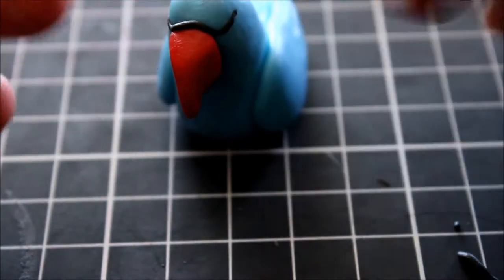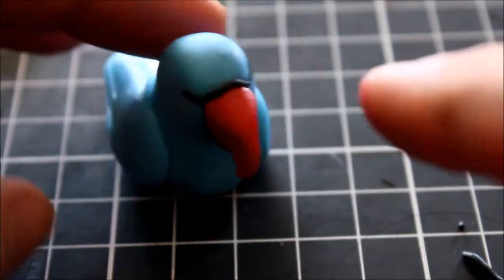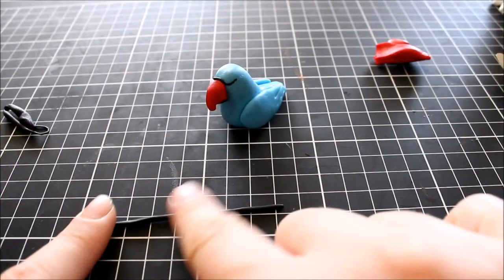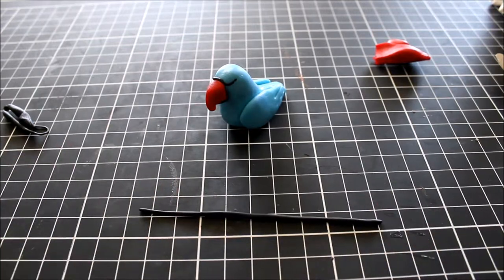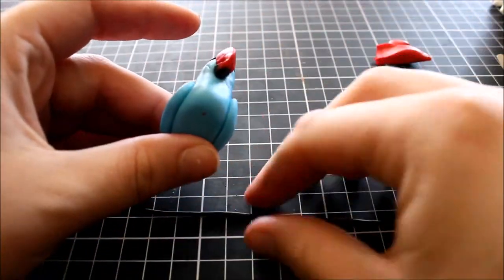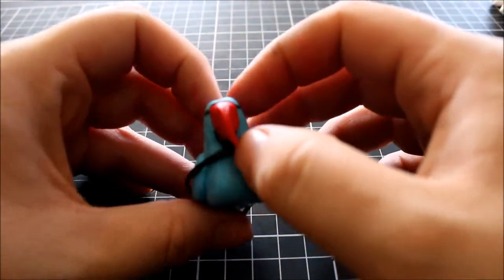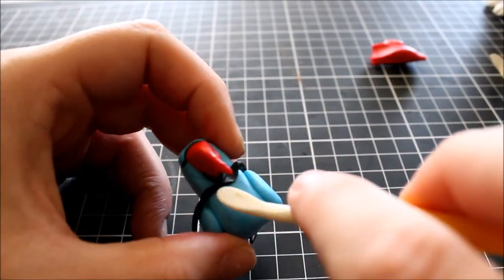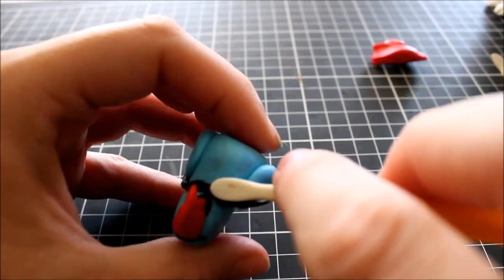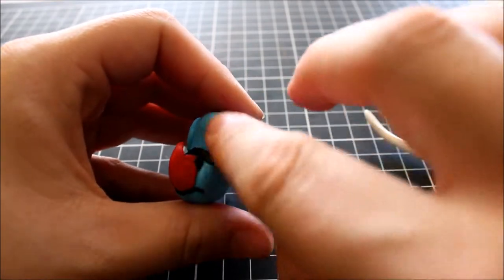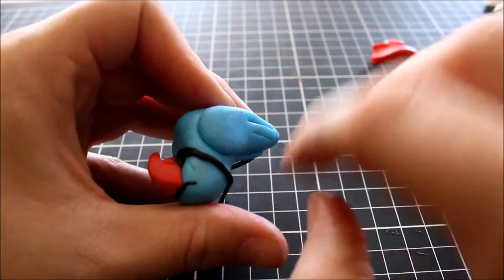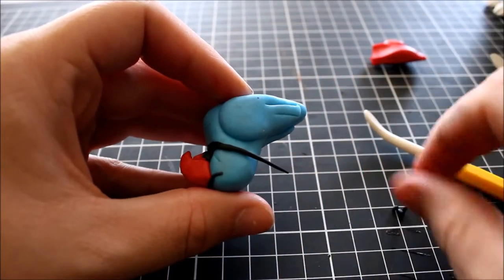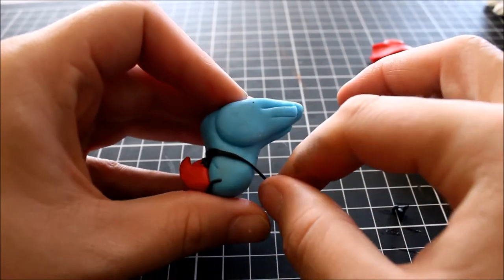To create the ring that runs around his neck, I'm rolling out another snake of black clay and wrapping that around his neck. Now I want the part underneath his beak to be a bit wider, and then that line becomes narrower as that ring wraps around his neck. I'll do that by pulling gently on that snake as I bring it around and just thinning out that line as I bring it around its neck.